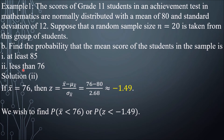Next, for less than 76, x-bar is equal to 76. Using the z-score formula again, the result is negative 1.49. The sample mean is 80 and the sample standard deviation is 2.68. We wish to find the probability that the sample mean is less than 76, or the counterpart in z-score is z less than negative 1.49.